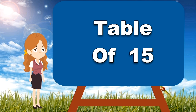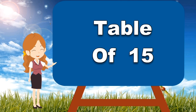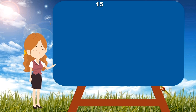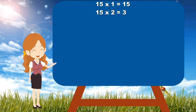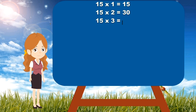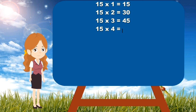Table of 15. Let's start. 15 times 1 is 15. 15 times 2 is 30. 15 times 3 is 45. 15 times 4 is 60. 15 times 5 is 75.